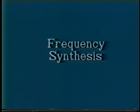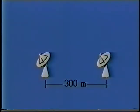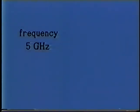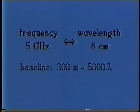Part 4: Frequency Synthesis. Remember that the coordinates of the Fourier transform, U and V, are measured in wavelengths. The distance between two antennas can be measured in meters; however, it can also be measured in wavelengths. Say that we are observing at a frequency of five gigahertz, which corresponds to a wavelength of six centimeters. At this frequency, 300 meters is the same as 5,000 wavelengths, or five kilowavelengths. Our 300-meter baseline is therefore equivalent to a baseline of five kilowavelengths.